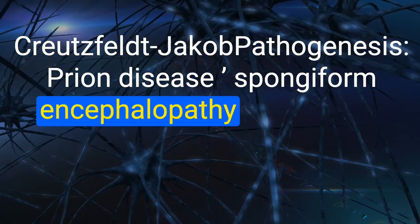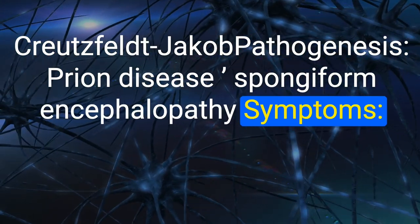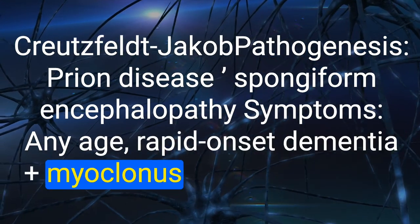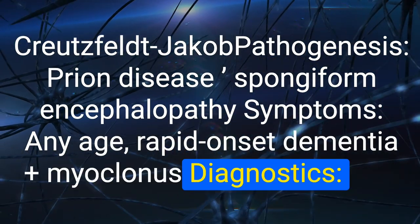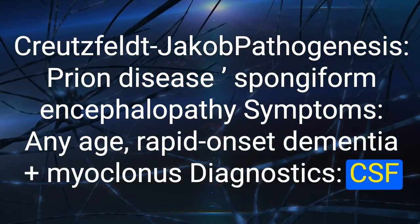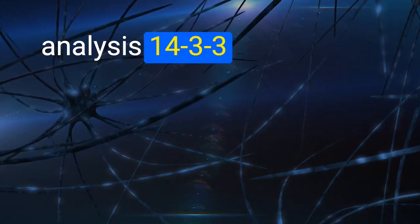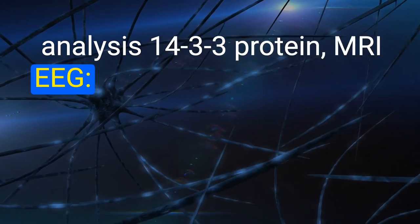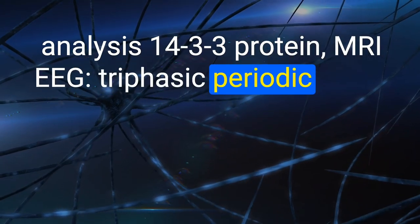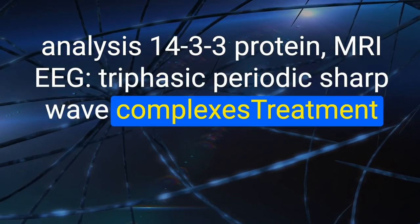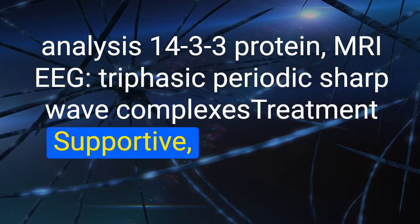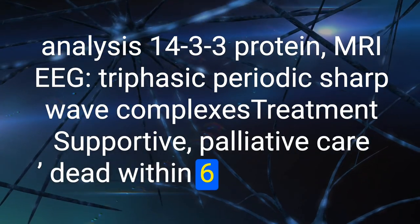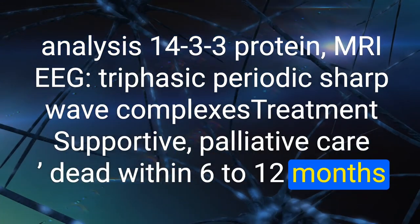127. Creutzfeldt-Jakob disease pathogenesis: prion disease, spongiform encephalopathy. Symptoms: any age, rapid onset dementia plus myoclonus. Diagnostics: CSF analysis showing 14-3-3 protein; MRI/EEG showing triphasic periodic sharp wave complexes. Treatment: supportive/palliative care; death within 6–12 months.